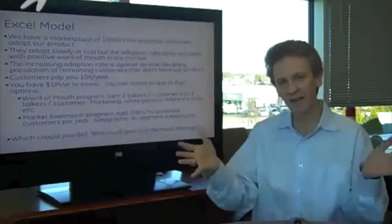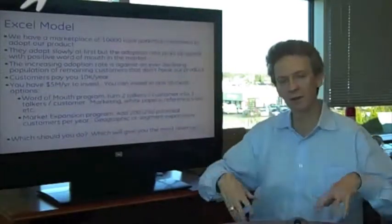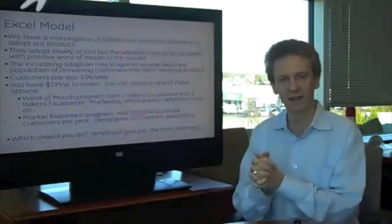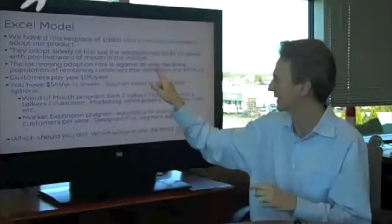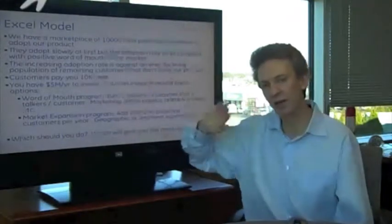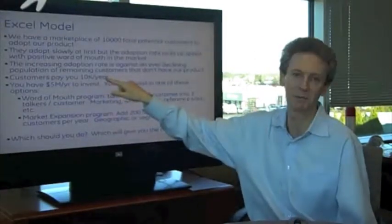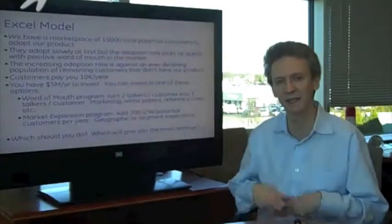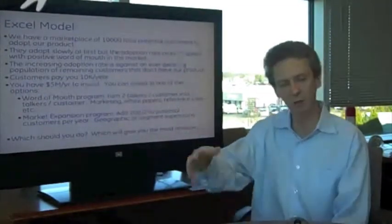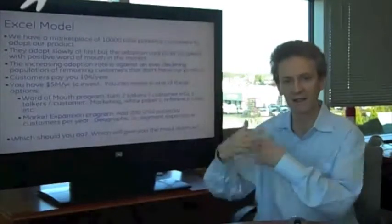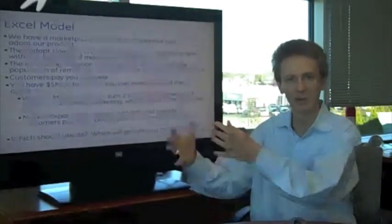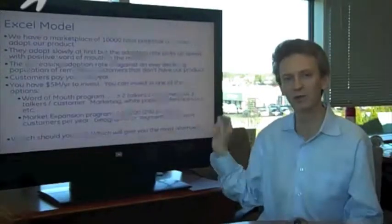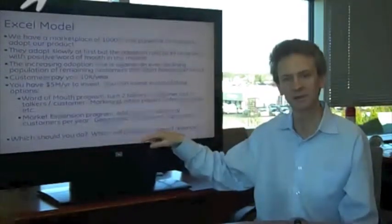Here are the specifics. We have 10,000 potential customers. They adopt slowly at first, but positive word of mouth drives that adoption. The increasing adoption rate, which is good, is multiplied by an ever-decreasing availability of customers. To compare the models, I made up a customer payment rate so they pay you $10,000 per year. And basically you have $5 million to invest each year. You can either invest in a word of mouth program—more marketing, white papers, things like that—or you can invest it in a market expansion program, so more distributors, localizing your product, things like that to get into more markets. So what will give you the most revenue over the long term? Which of these strategies? Let's take a look.